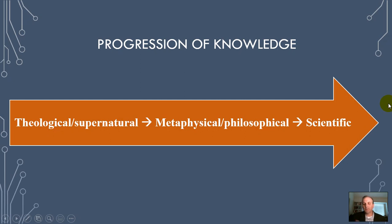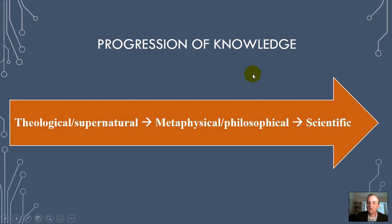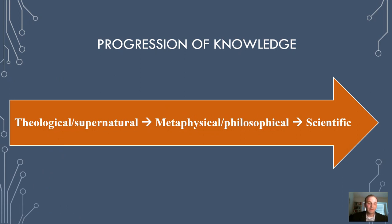The progression of knowledge: reality underlies knowledge, and that's why we got into the discussion of reality — it's what people create to symbolically represent reality. Historically, through the progression of humankind, explanations for events tend to unfold in a particular dynamic — there are theological or supernatural explanations for an event, then metaphysical or philosophical explanations, and then it progresses on to scientific explanations.